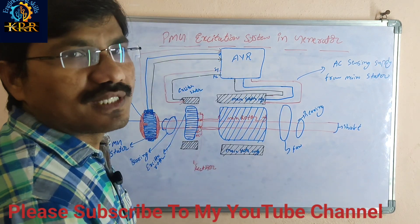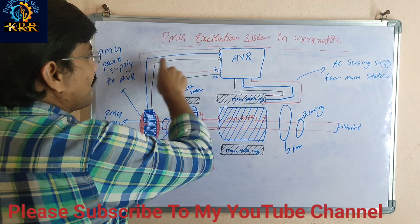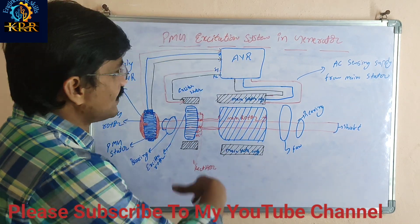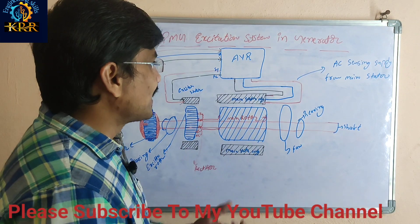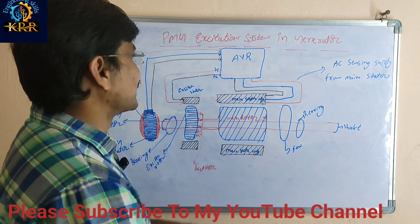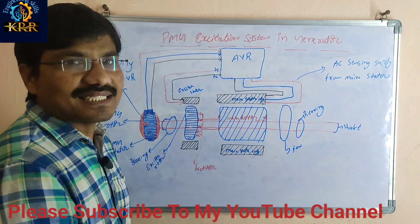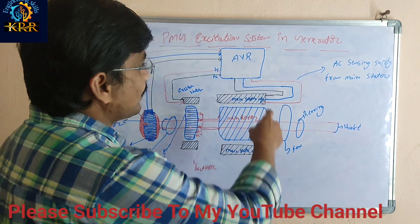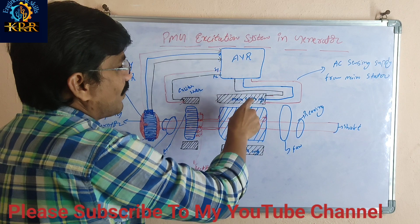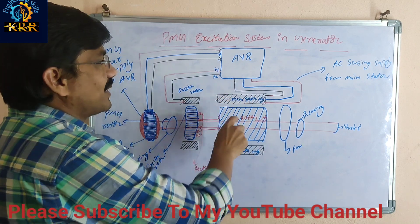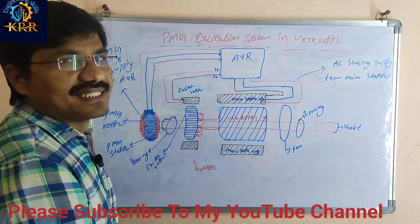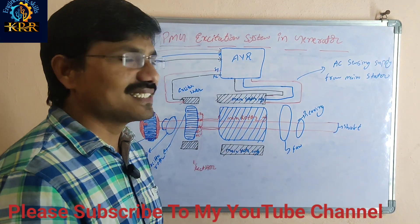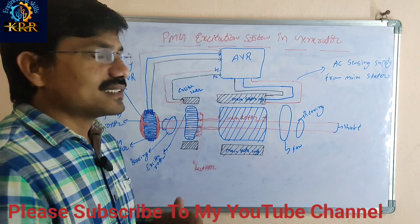The power generated in the PMG stator is supplied to the Automatic Voltage Regulator (AVR). Previously in the self-excitation system, the power supply was taken from the main stator and the sensing was also taken from the main stator. But there are some disadvantages in the self-excitation system.